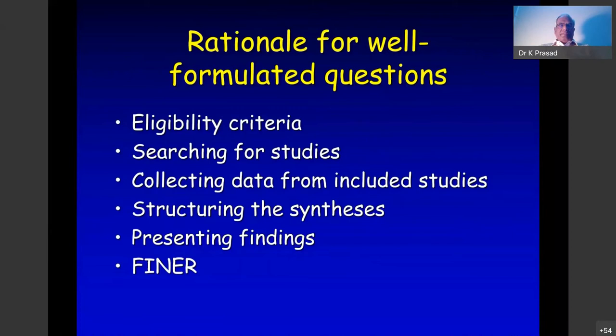Before you start a review it is necessary to have a well-formulated question. The question decides what kinds of studies will be included in the systematic review, so eligibility criteria for inclusion of studies depends on what the question is. The search strategy also derives its terminology and search terms from the review question.